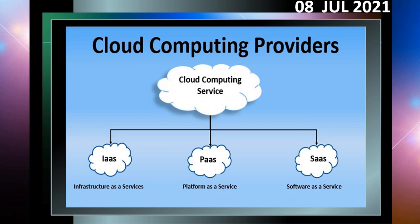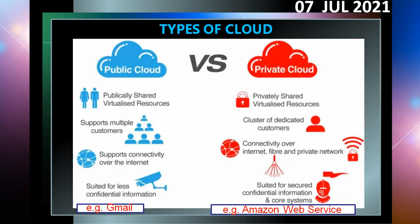In the previous class we also saw the public cloud and private cloud. Public cloud is shared, virtualized resources publicly, whereas private cloud is privately shared. Multiple customers are present in the public cloud, while a cluster of dedicated customers is there in private. Public cloud supports only connectivity over the internet, whereas private cloud also supports fiber and separate private networks like Wi-Fi. Public cloud is preferred when information is less confidential, while private cloud is preferred when information is confidential and must be more secure.